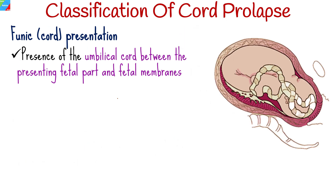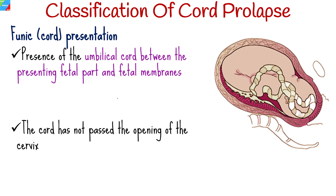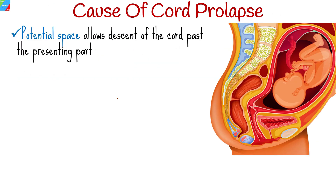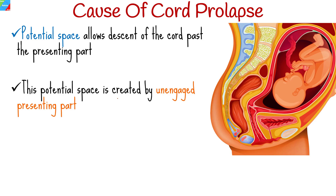Funic presentation occurs when there is presence of the umbilical cord between the presenting fetal part and the fetal membrane, and the cord has not passed the opening of the cervix. A potential space, created by an unengaged presenting part, allows descent of the cord past the presenting part.